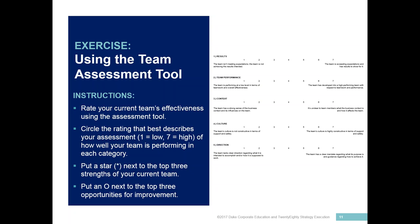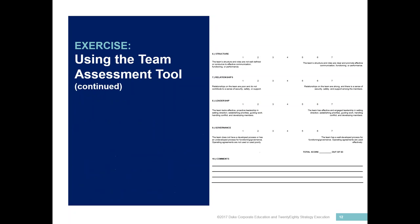There is a dimension around team results, a dimension around team performance, a dimension around team context, a dimension around team culture, team direction, team structure, a dimension around the relationships within the team, a dimension around the leadership attributes within the team, and finally a dimension around team governance.